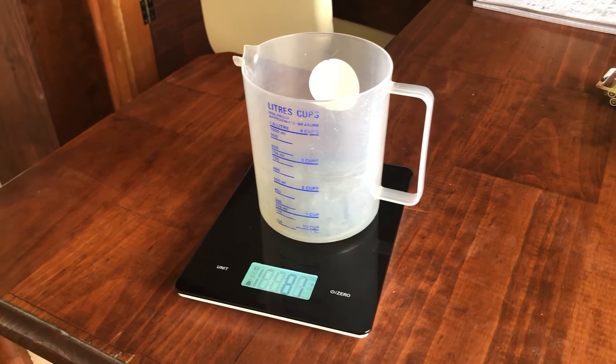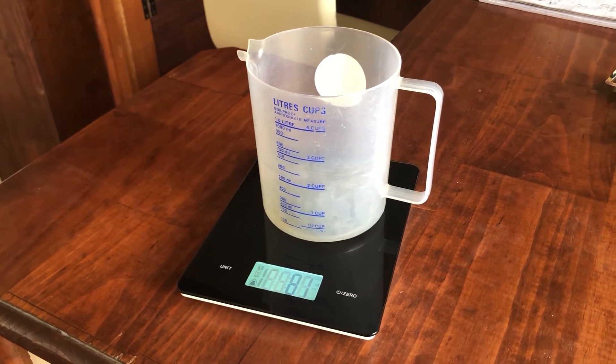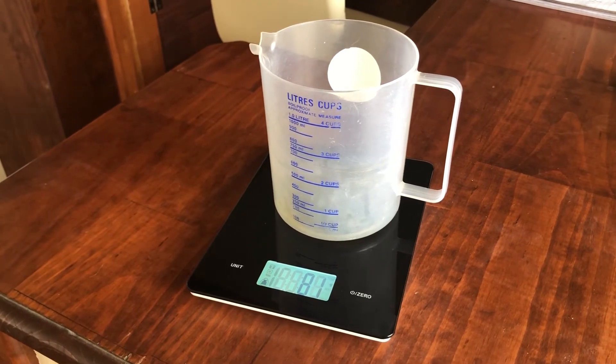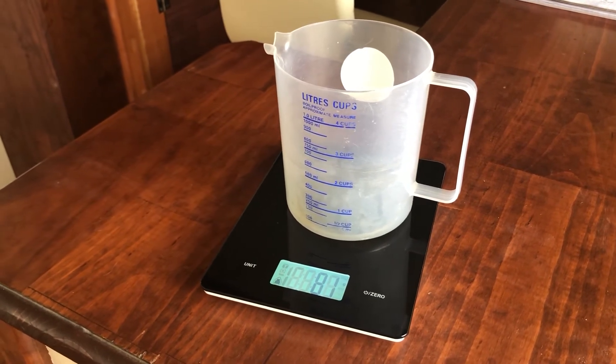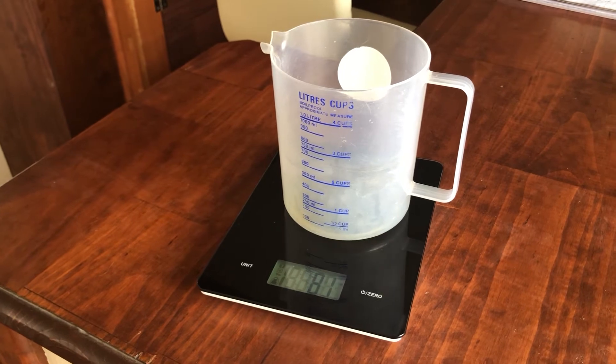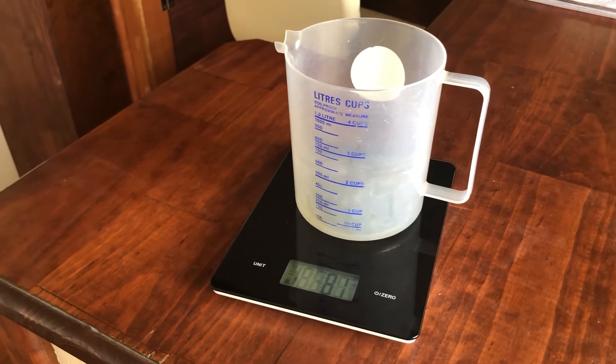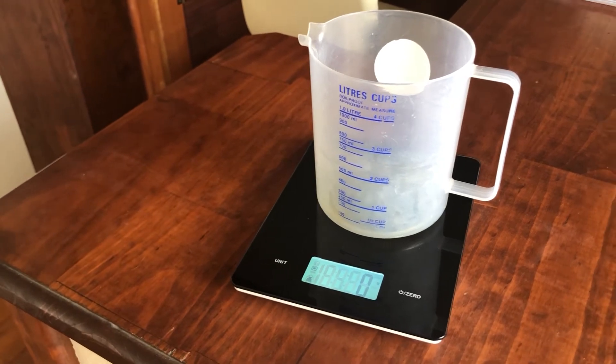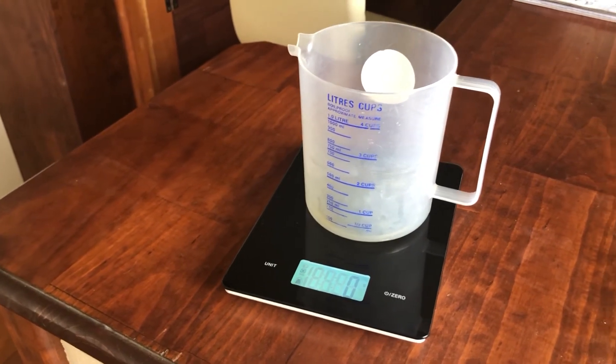Okay so what we've got here is our jug. Obviously the jug is 81 grams so we want to set that to zero because what we actually want is the grams of the water. We don't really care about the grams of the jug. So I'm just going to set that to zero and that's now going to be perfect for us when we put our water in.